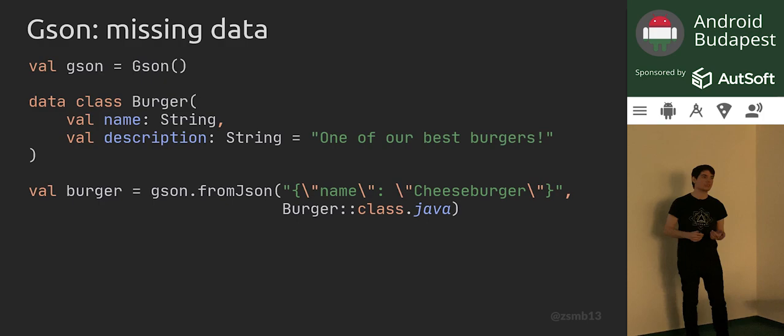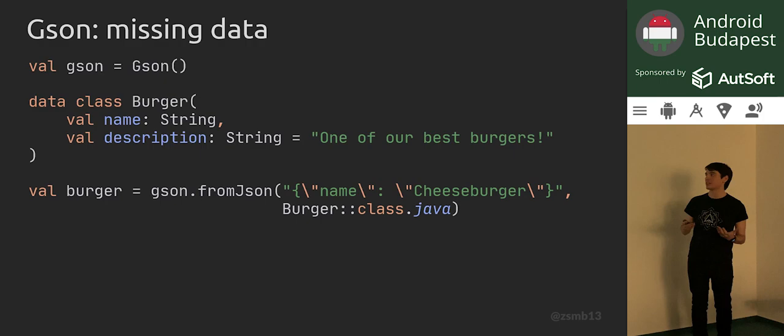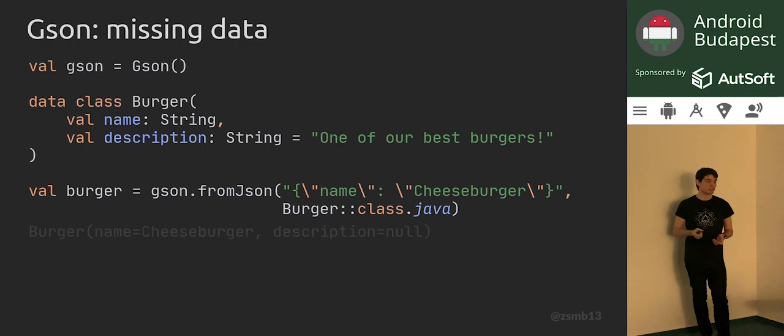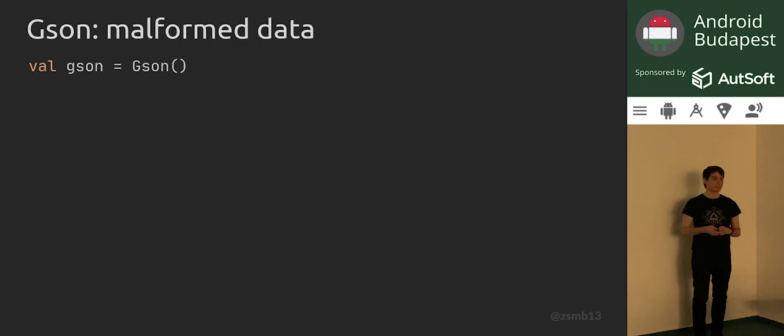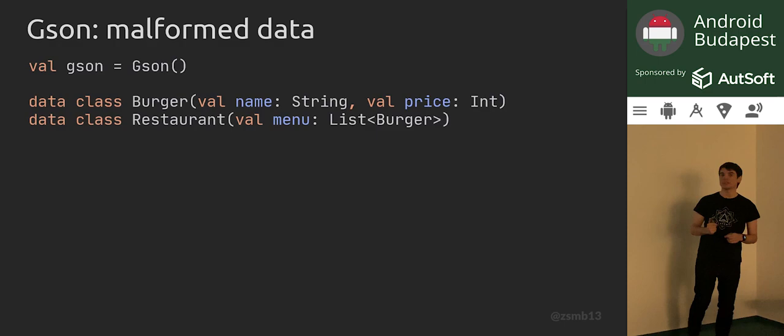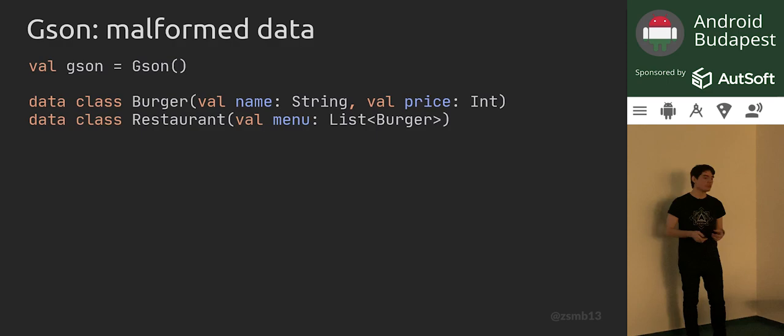What if we try to mitigate this by giving the description a default value? GSON is of course going to go ahead and ignore that for you and still give you a null value for the description. And lastly, let's look at how GSON handles malformed data. We're going to have a burger and a restaurant which has a list of burgers on its menu, and try to parse a JSON string where the last burger's price is a crocodile instead of a normal integer value.